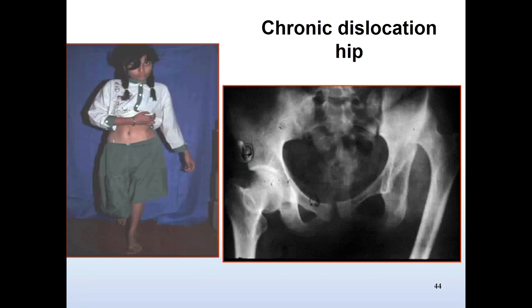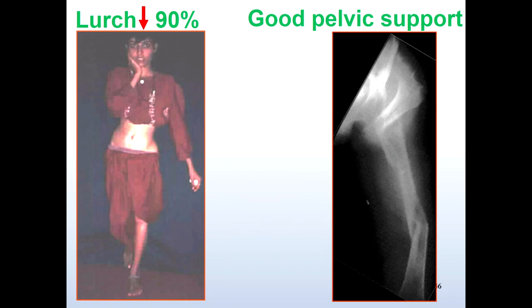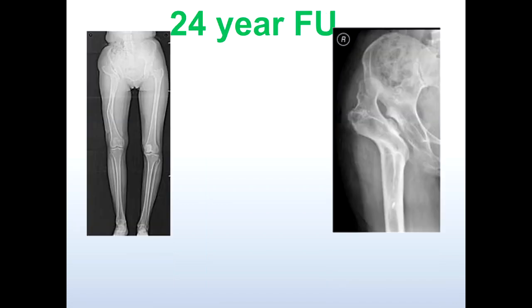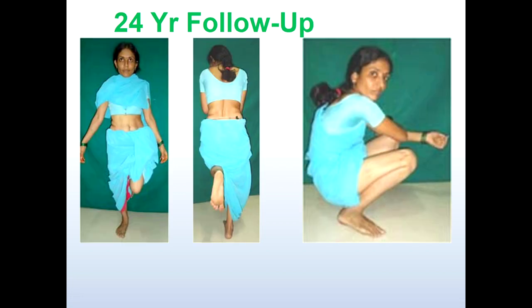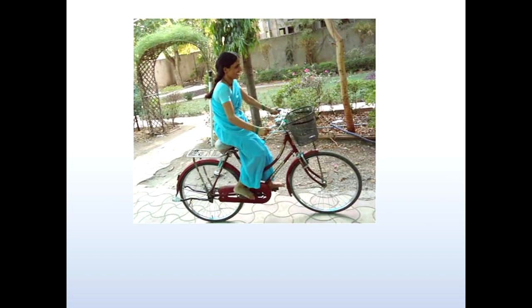How about dislocated hips? This young lady came to me with a chronically dislocated hip long ago. A very high valgus was obtained, 4-centimeter lengthening, then de-valgus. Here she is with reduced lurch — what looks like a zigzag femur — but at 24 years this is how she is, with a good mechanical axis passing through the center of the knee. This is the kind of articulation she has, and this is her function: she has two children, she can support them, she works, and she goes on a bicycle. She's fine.